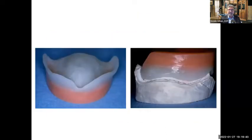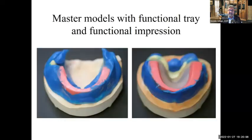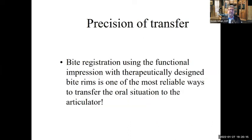This is the denture base plate and occlusal rim for a functional impression and bite — making a custom tray with wax, contouring it so you can border mold, take an impression, then if using PVS material, take it out of the mouth and contour the wax a bit, put it back in the mouth, and also get an accurate bite registration at the same time. That eliminates one visit. This is the master model with the functional tray and impression. The bite registration using the functional impression with therapeutically designed bite rims is one of the most reliable ways to transfer the oral situation to the articulator.